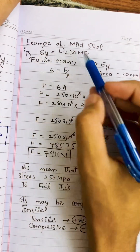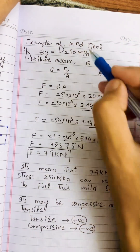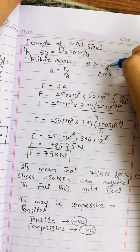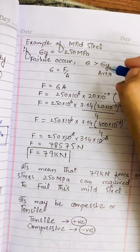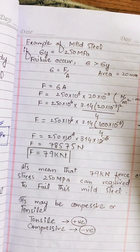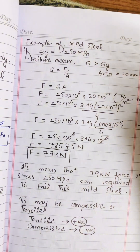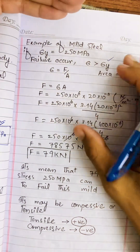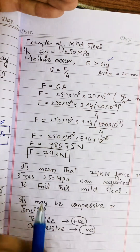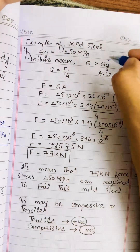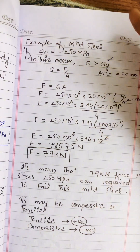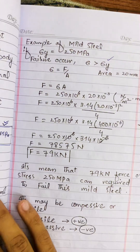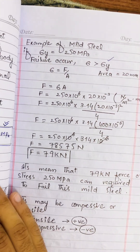Example: If the yield stress of a mild steel rod is 250 MPa and the diameter is 20 mm, knowing the yield stress lets us apply force appropriately. Force F equals stress multiplied by area. Area = π × d² / 4 = 3.14 × (20 × 10⁻³)² / 4. This gives approximately 785 N, or about 79 kN. So applying 79 kN or beyond will cause the mild steel to yield.